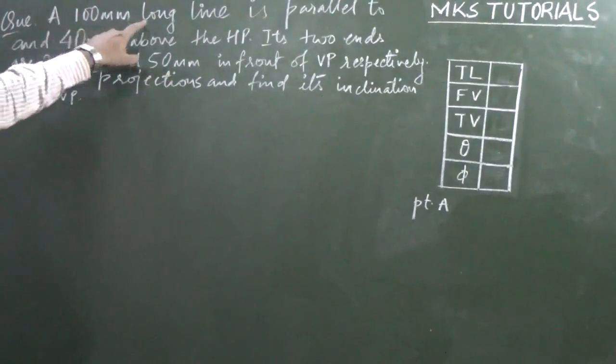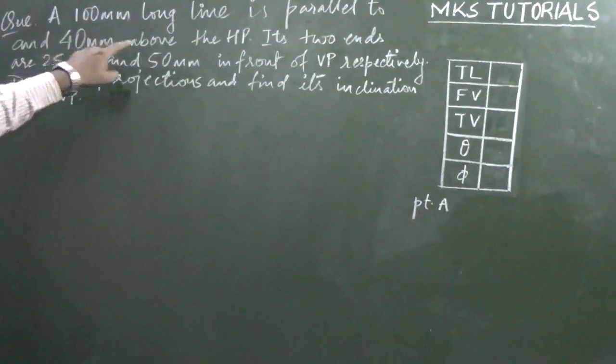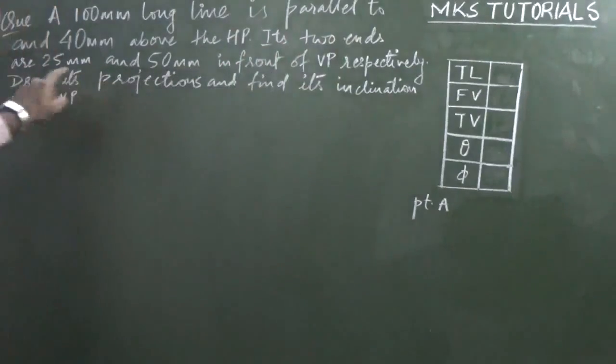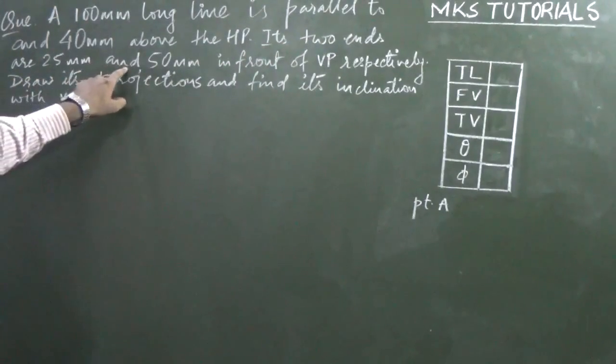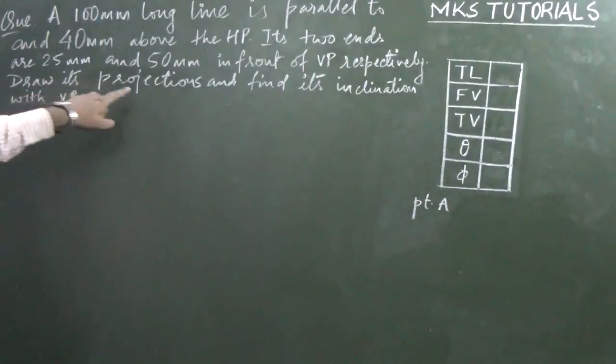A 100mm long line is parallel to and 40mm above the HP. Its two ends are 25mm and 50mm in front of the VP respectively. Draw its projections and find its inclination with the VP.